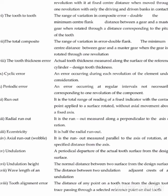Next is tooth thickness error. Tooth thickness error is the value obtained by subtracting the design tooth thickness from the actual tooth thickness, when measured from a reference cylinder. One revolution of the component is not necessary for tooth thickness error — it is an error which takes place after a regular interval of time.